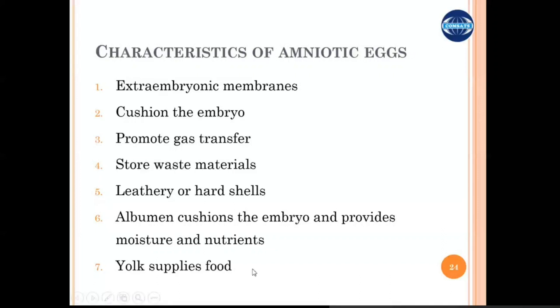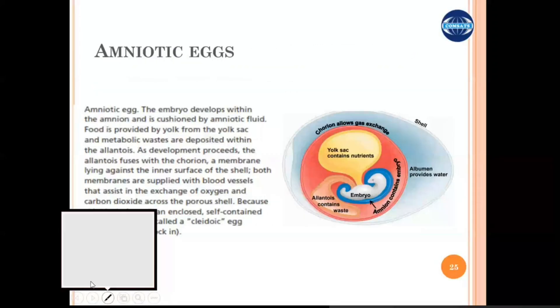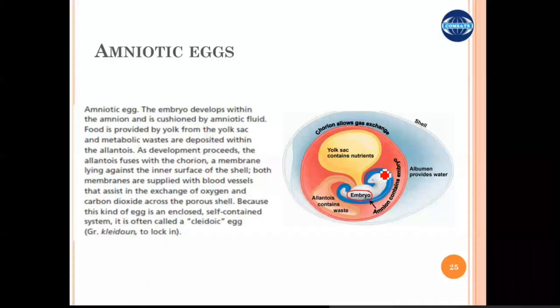Looking at the structure of the egg, the embryo is connected and confined within a membrane — the blue membrane — which is the amniotic membrane. Within the amniotic membrane is a specialized fluid called amniotic fluid, which provides cushioning support and nutritive support to the embryo. The embryo also has access and is connected to another membrane or pouch structure, the yellow one, which is the yolk pouch, and it provides nutrients.